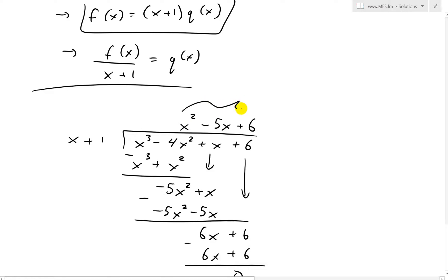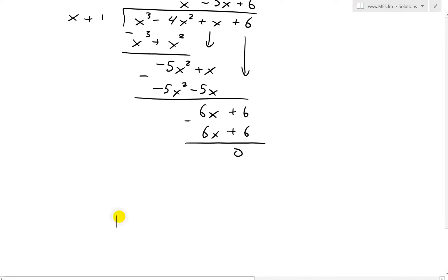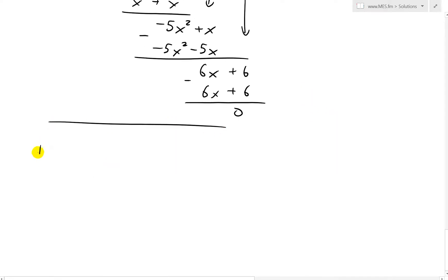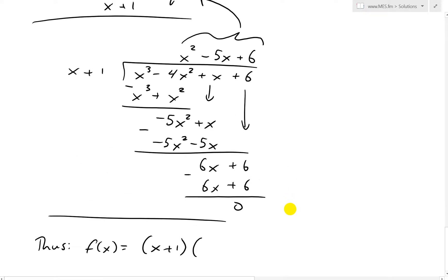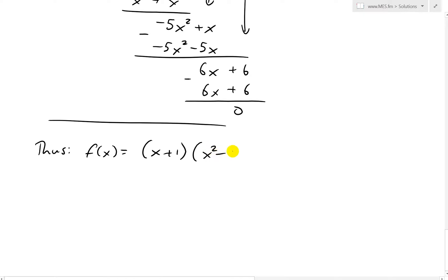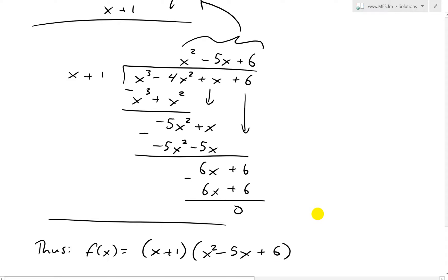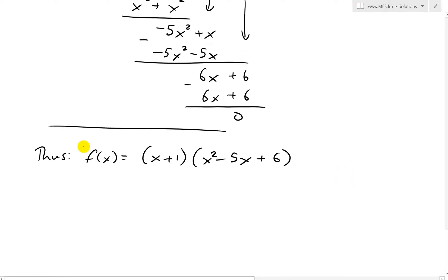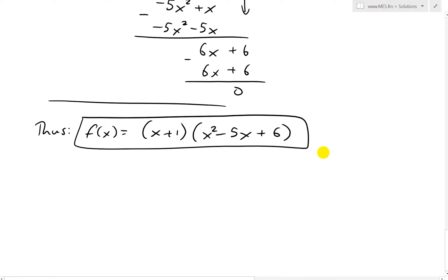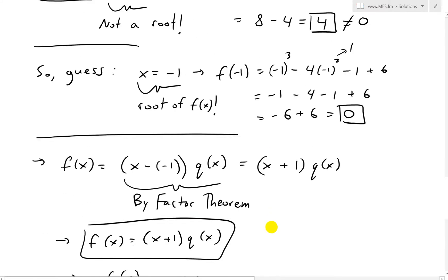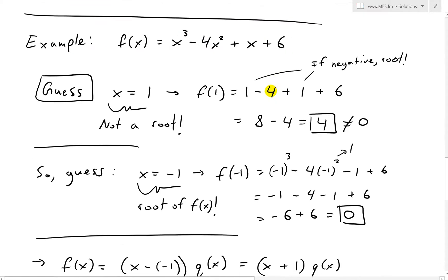So q of x equals x squared minus 5x plus 6. Thus f of x equals x plus 1 times x squared minus 5x plus 6. You can learn more about polynomial long division in my earlier videos. We can stop here, or we could go even further — and notice this polynomial has degree 2, which is simpler than the original degree 3 polynomial.